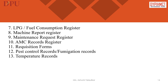Further records include: maintenance request register to record maintenance of all food and beverage equipment; AMC records register to maintain annual maintenance records of all equipment; requisition forms where the department records procurement from stores; pest control or fumigation records to make sure all areas have been properly fumigated as per the allocated days mentioned on notice boards; temperature records in terms of temperatures to be maintained for the buffet — both hot and cold — three times a day.